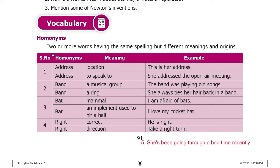Homophones: two or more words having the same spelling but different meaning and origins. So the words where the spelling is the same but meaning and origin are different — those are called homophones.